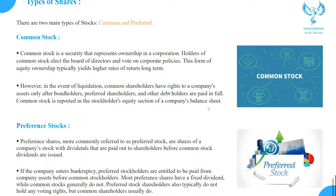Common stock is reported in the stockholders' equity section of a company's balance sheet. Preference stock, or preferred stock, is most commonly referred to as preferred shares — these are shares of company stock with dividends that are paid out to shareholders before common stock dividends are issued. If the company enters bankruptcy, preferred stockholders are entitled to be paid from company assets before common stockholders.